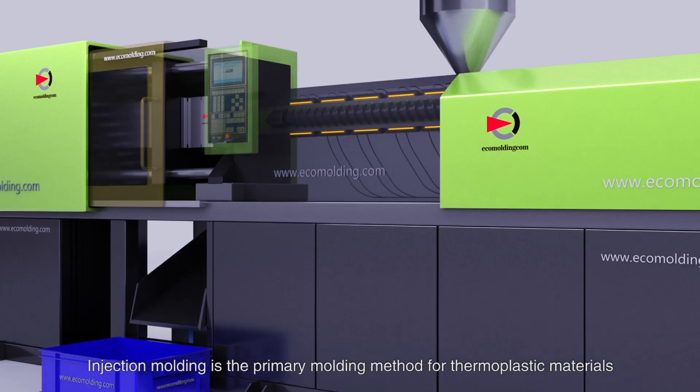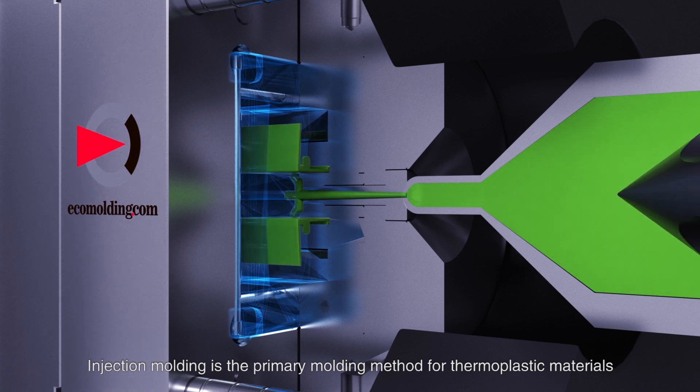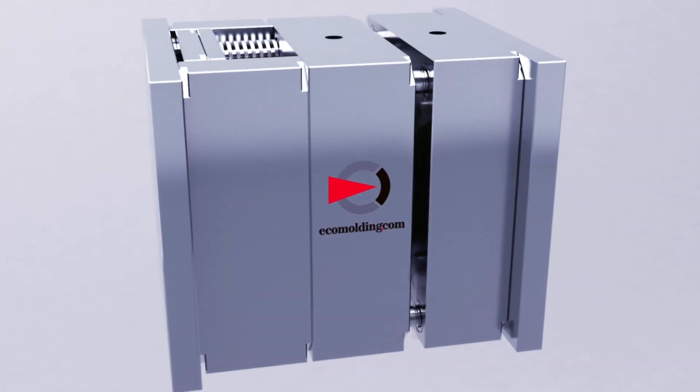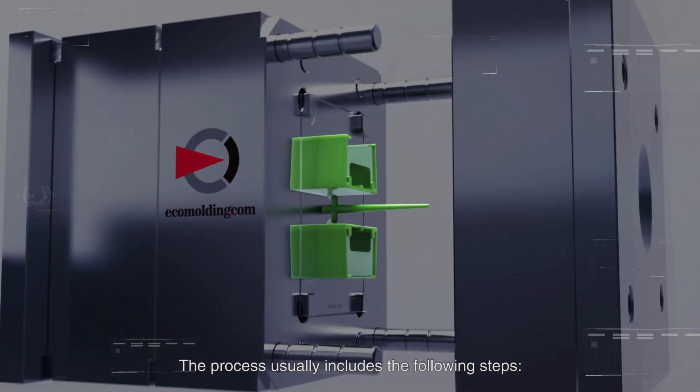Injection molding is the primary molding method for thermoplastic materials. The process usually includes the following steps.